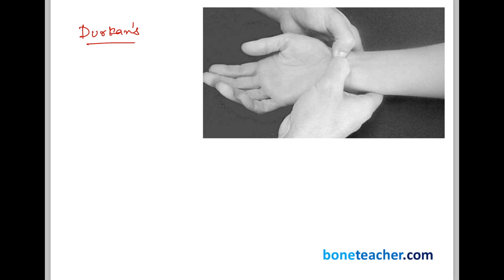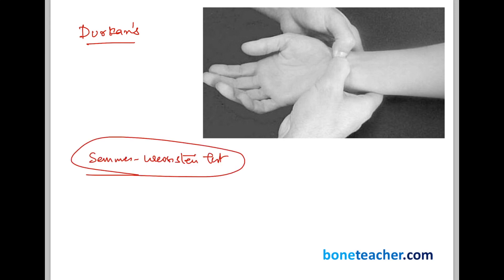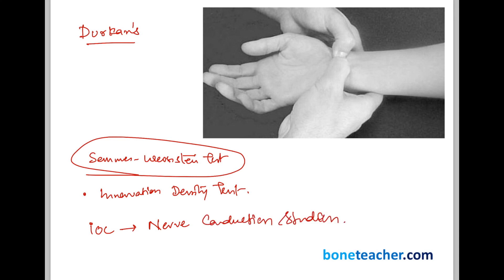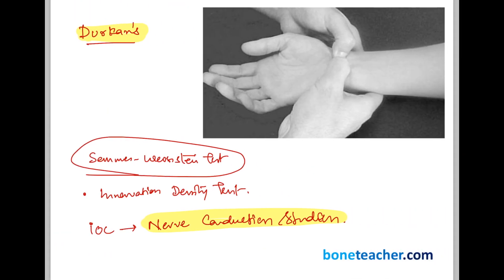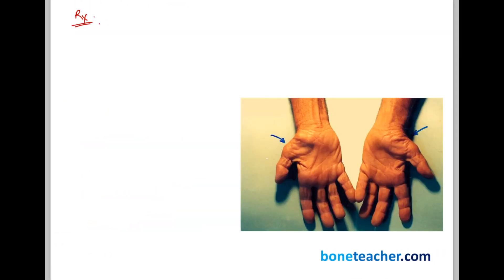Other tests to be familiar with include the Semmes-Weinstein test and the innervation density test. Most importantly, the investigation of choice is nerve conduction studies. To summarize the key tests: nerve conduction studies is the investigation of choice; Durkan's test compresses the median nerve with the thumb; Phalen's and reverse Phalen's tests are held for 60 seconds; and Tinel's sign is important to remember.